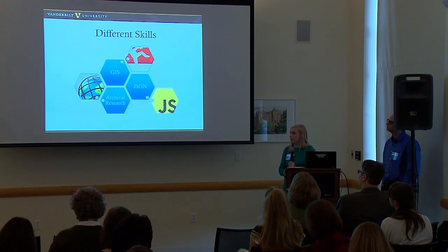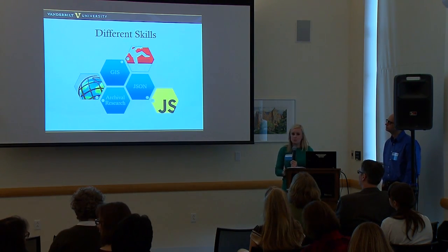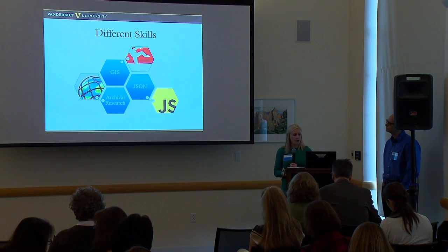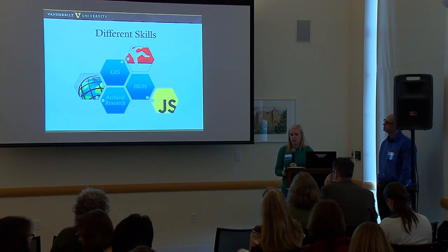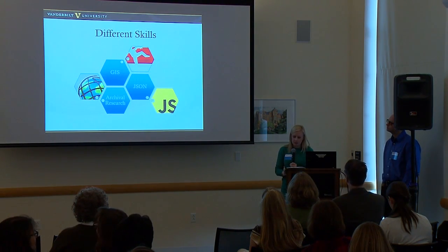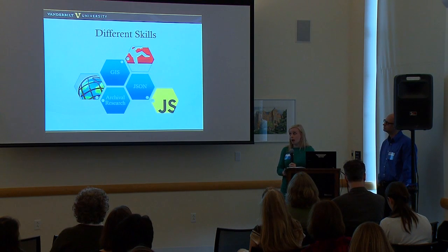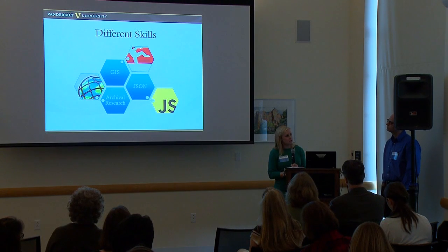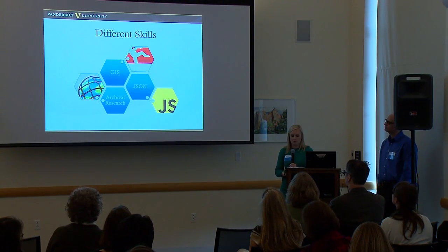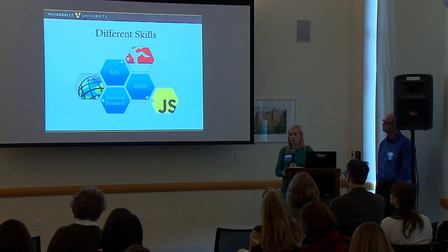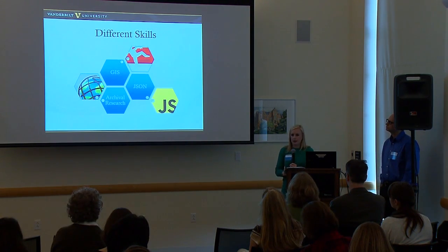That's where different skill sets come in. This project emphasizes that students work with different library professionals who all have different skill sets, working complementary to one another. In this specific project, we had three mentors: myself working on the GIS component, Cliff working on the JSON and mobile technologies component, and our Associate Director of Special Collections working on the archival research. There's really no formal leader — we're all working together to guide the student to complete the project.